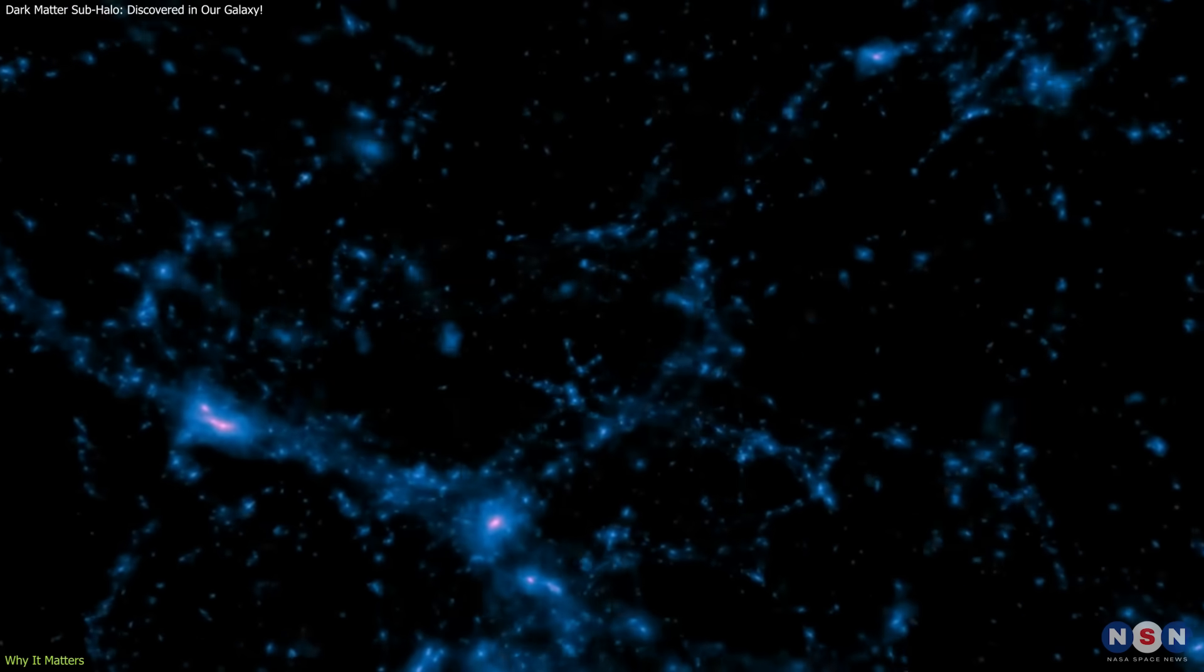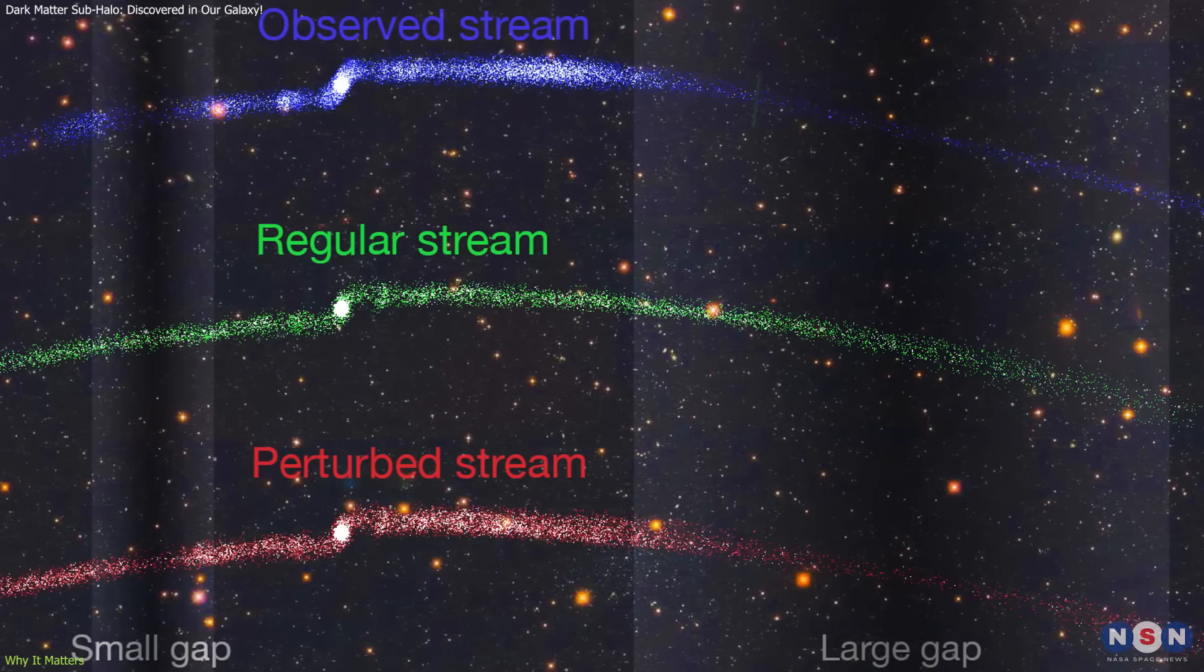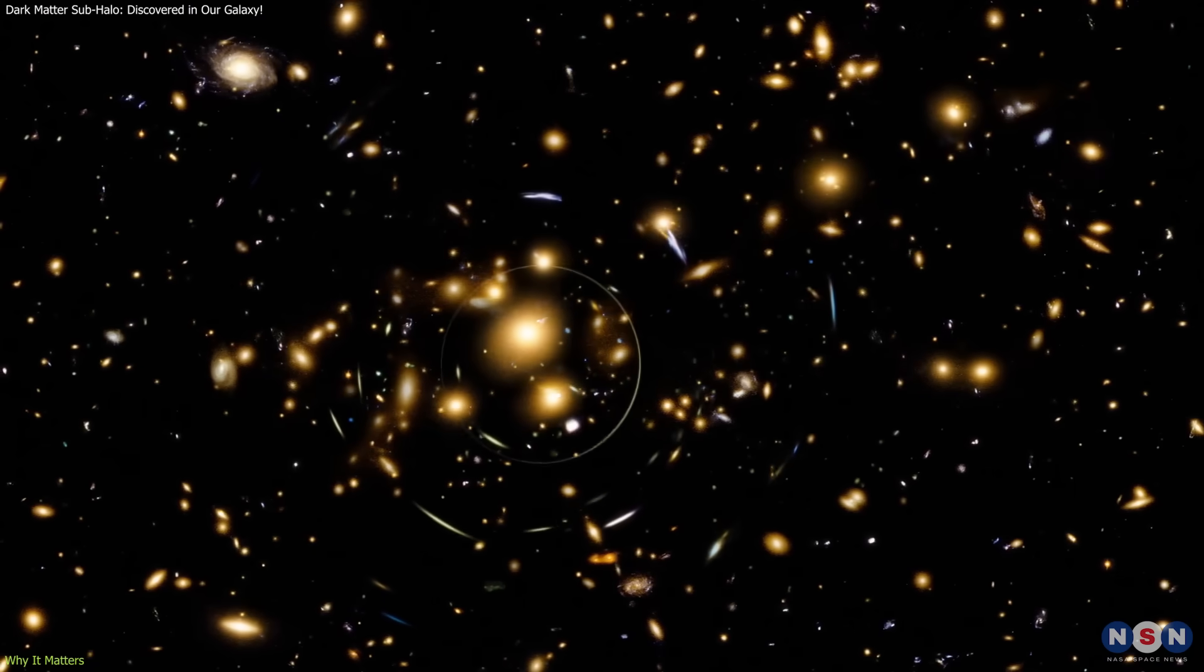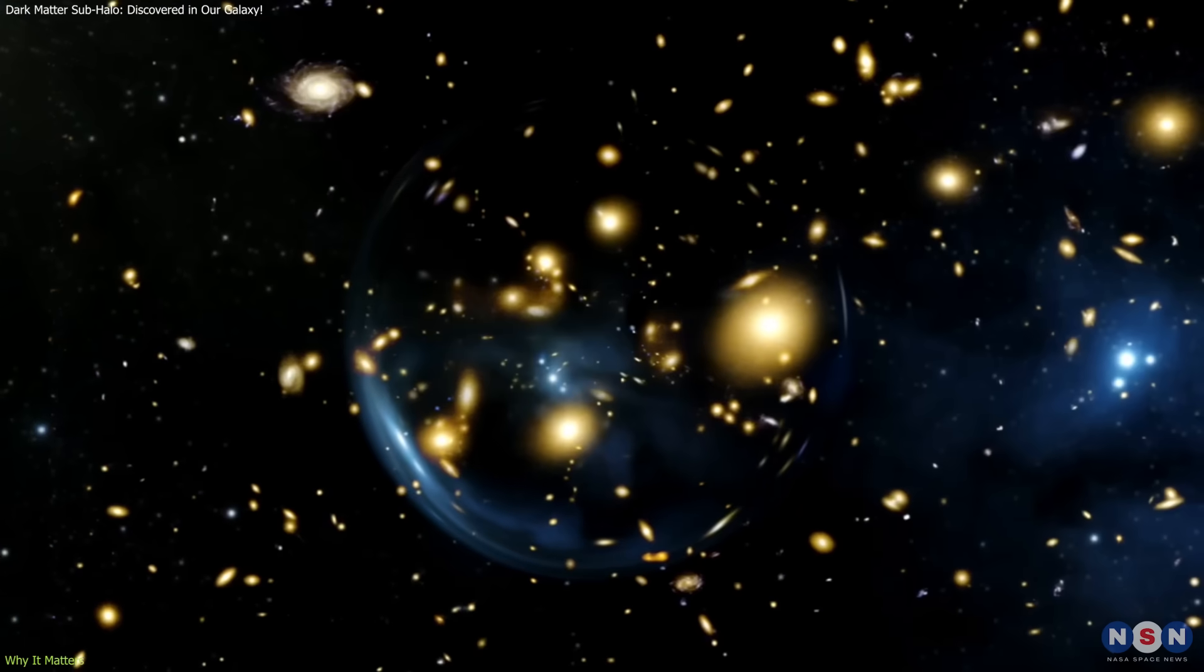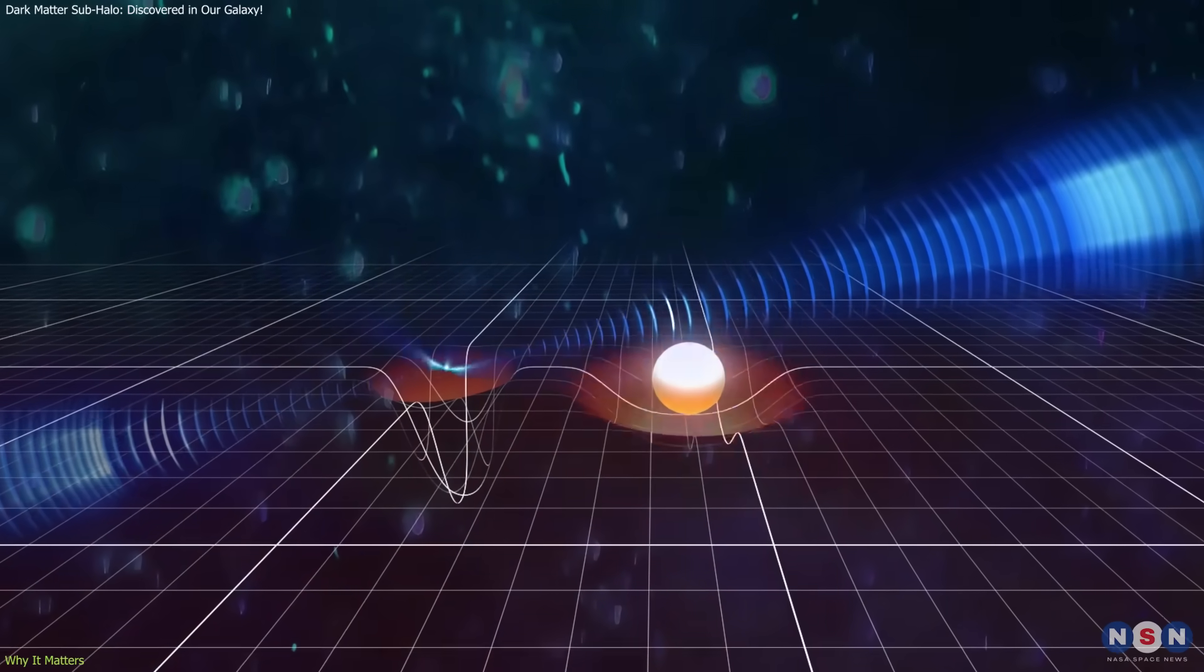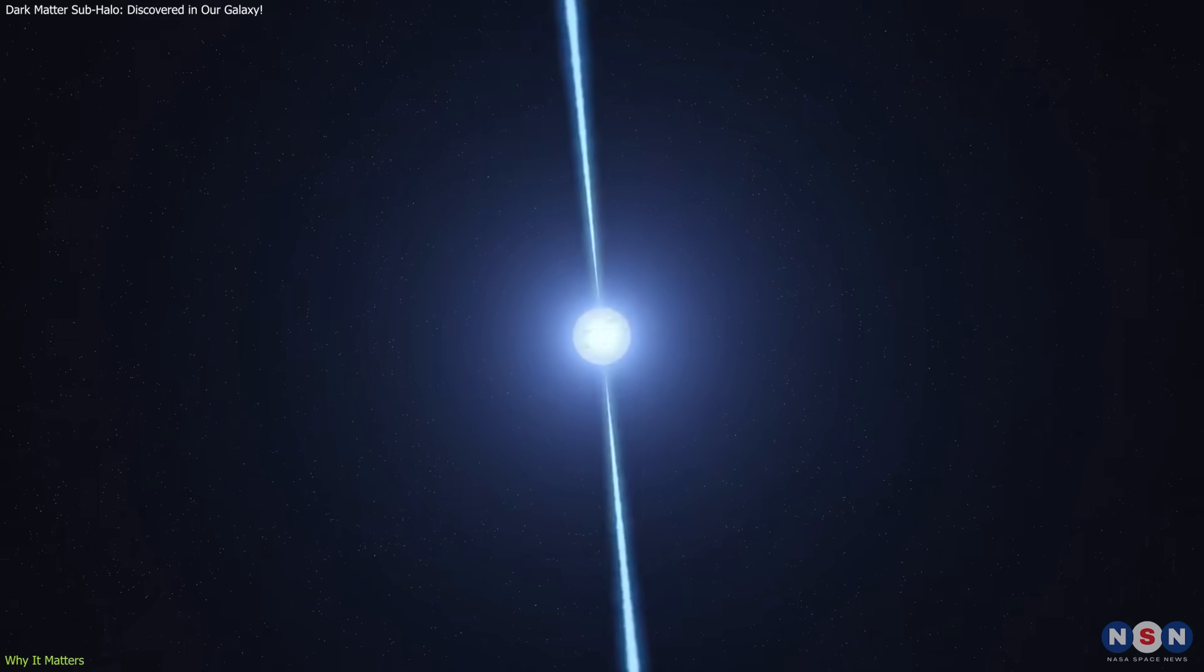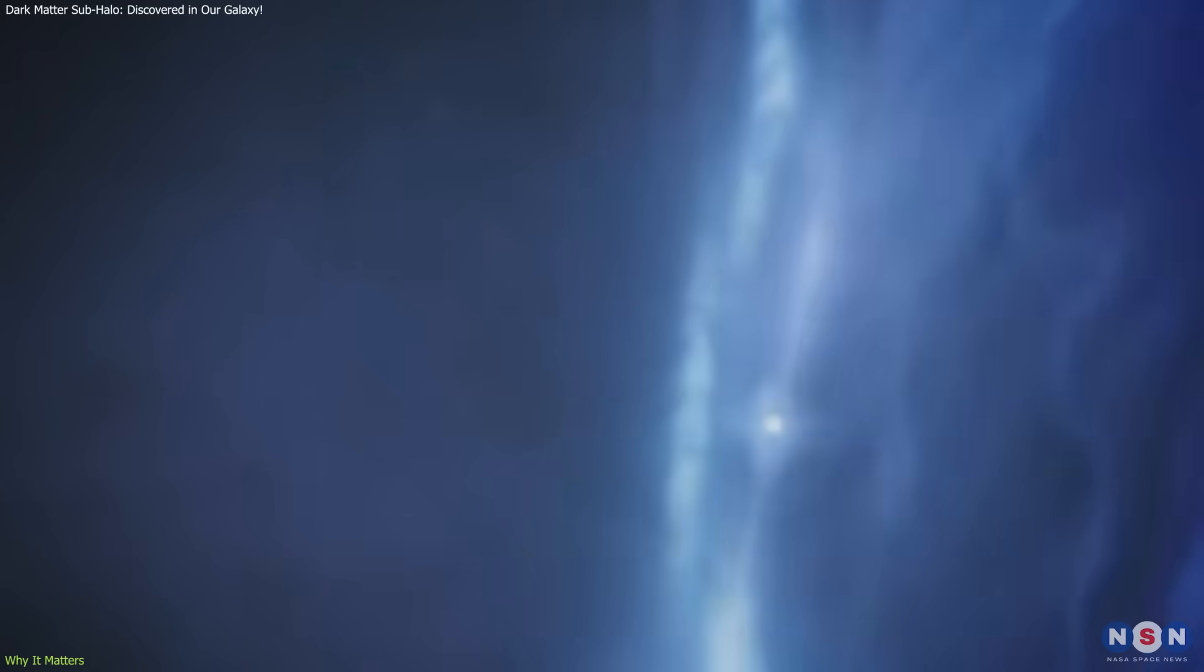Until now, evidence for sub-halos inside the Milky Way has been indirect. Astronomers have suspected their presence when stellar streams—rivers of stars pulled from clusters—show gaps, as if tugged by unseen masses. Others have looked for their effects through gravitational lensing, where light from background galaxies bends due to invisible objects in the foreground. While these approaches provided hints, none gave a clear, local detection. That's what makes this result different. By using pulsar timing, scientists bypass the uncertainties of modeling stars or gas and instead measure acceleration directly. Pulsars effectively become test particles in the galaxy, their precise timing revealing gravitational features that would otherwise remain invisible.